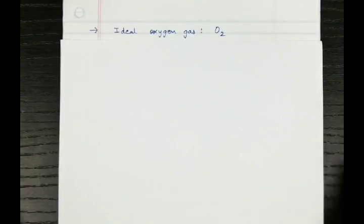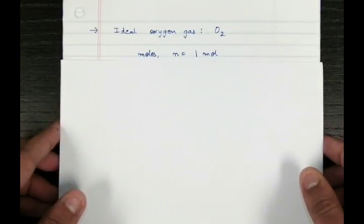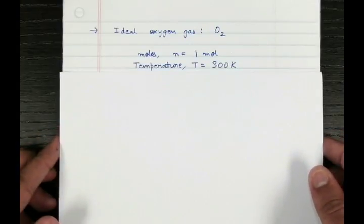So let's say we have ideal O2 gas, that is the Oxygen gas. Let's say we have one mole of Oxygen gas at a temperature of 300 Kelvin.